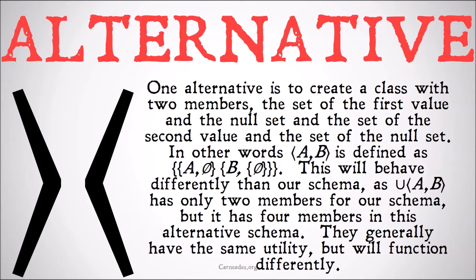The same basic principle is still here: a is distinct from b because a is paired, in a member of our ordered pair, with the null set, whereas b is paired with the set of the null set.